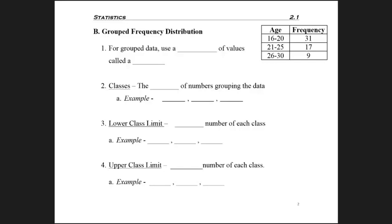The second type of frequency distribution we want to be able to create is called a grouped frequency distribution because of the nature of the data. So for grouped data, you will use a range of values, and each of these ranges are called a class.